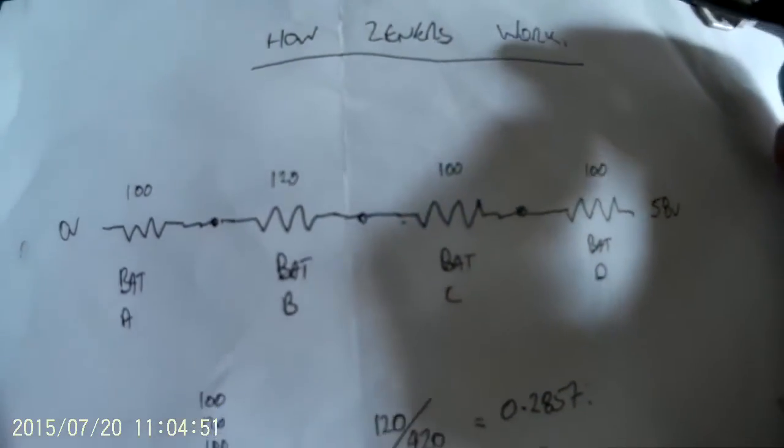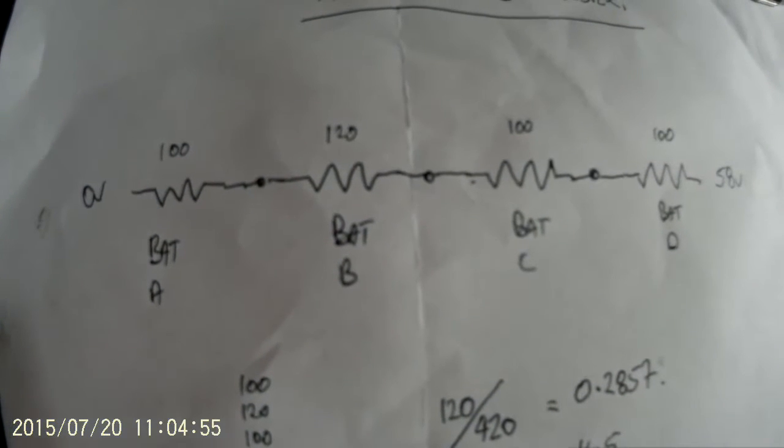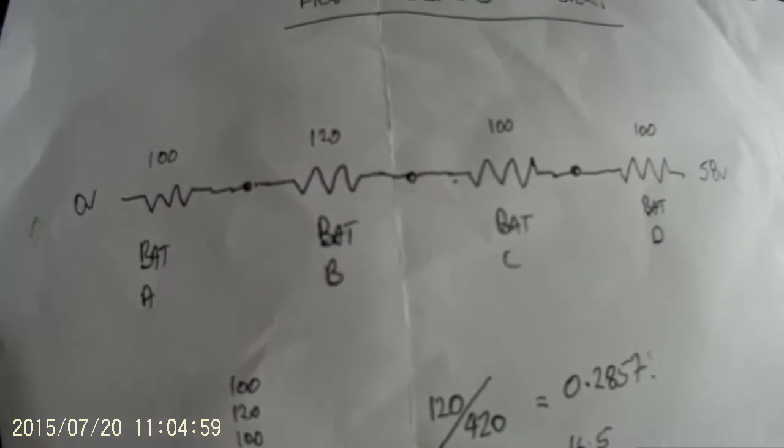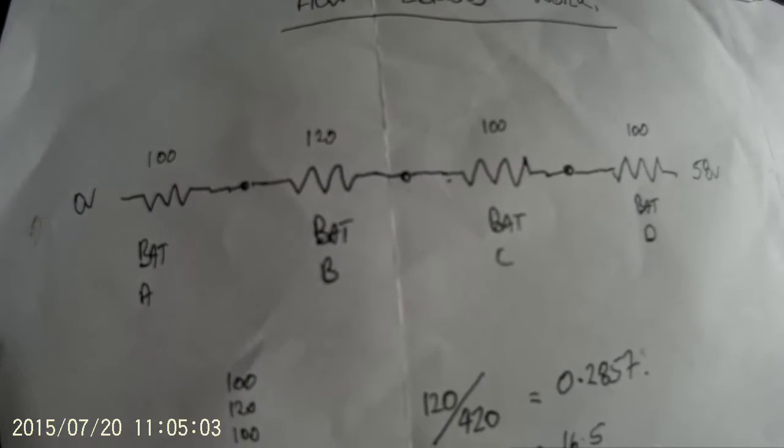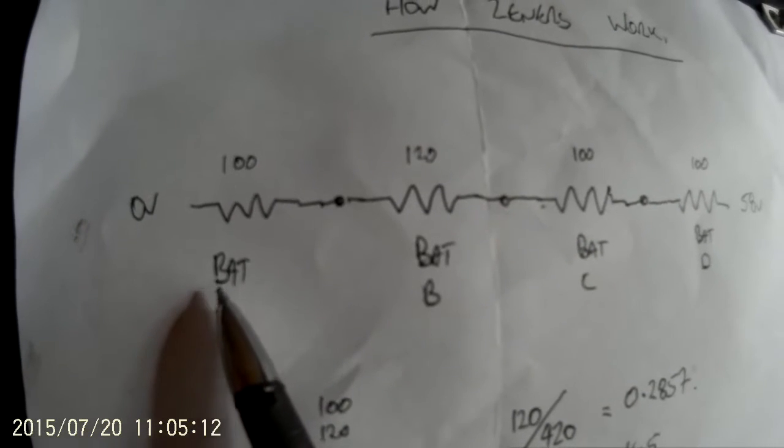So here's how the Xenas work. If you imagine, as I said before in some of my earlier videos, as the batteries charge, their internal resistance goes up. So it's pretty hard to measure the actual internal resistance, but it's all what it is relatively. So if we've got here, battery A,